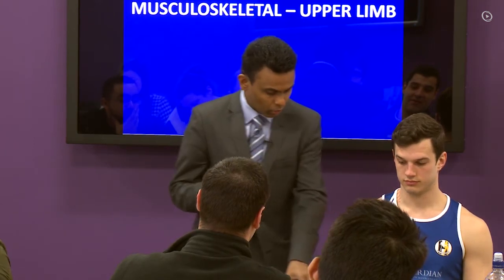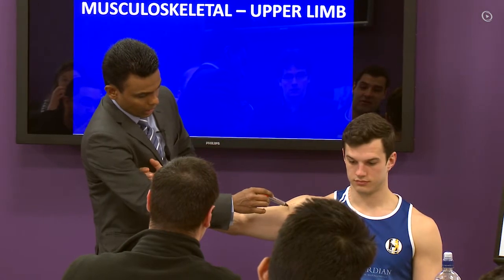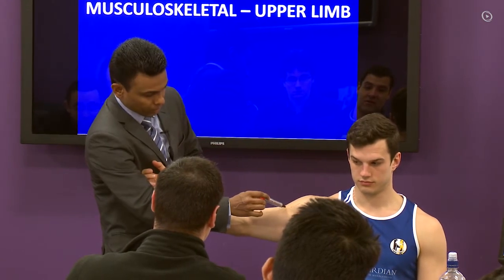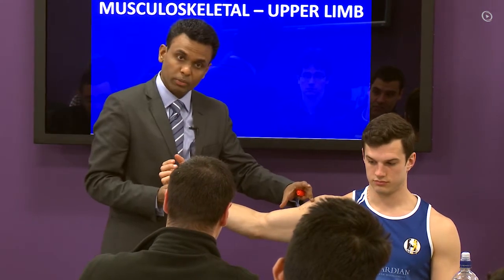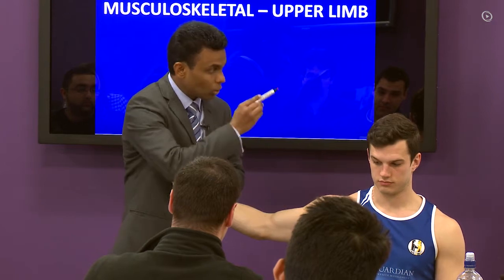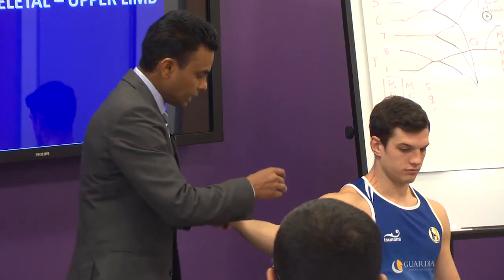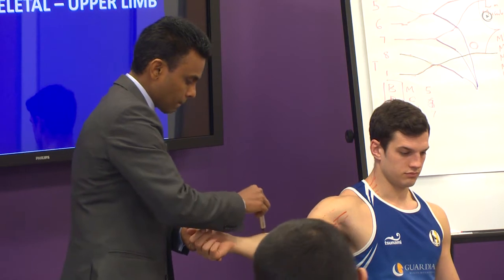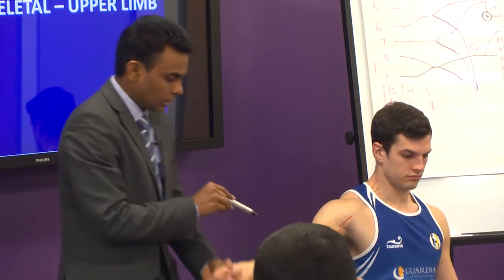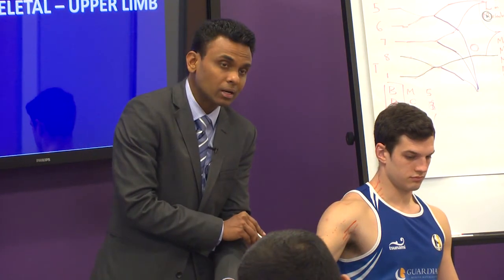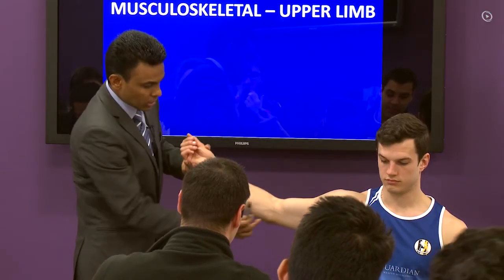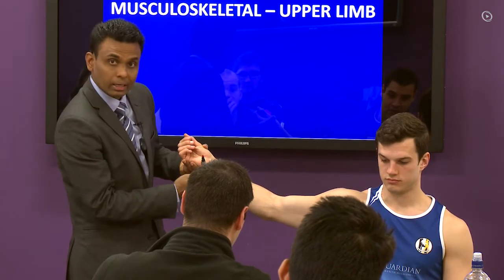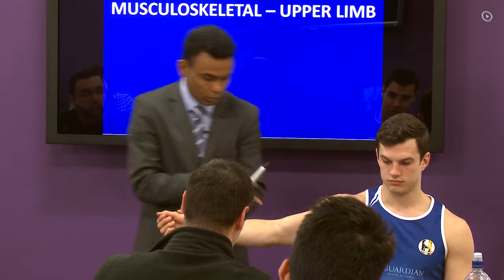The musculocutaneous nerve comes lateral to the artery, then it lies between the coracobrachialis muscle. It supplies all three BBC muscles, and then it becomes cutaneous. At that point it's called the lateral cutaneous nerve of the forearm — that's why it's called musculocutaneous.